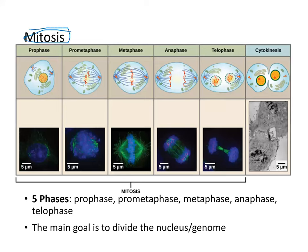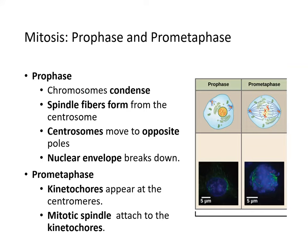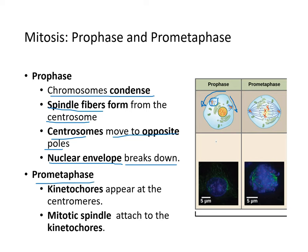Here is mitosis shown in more diagrammatic and photographic detail. The five phases are prophase, prometaphase, metaphase, anaphase, and telophase. The goal of mitosis is to divide the nucleus and the genome. In prophase, chromosomes condense, spindle fibers form from the centrosomes, and the centrosomes start moving to opposite poles. The nuclear envelope begins to break down. During prometaphase, kinetochores appear and the mitotic spindle microtubules attach to them.